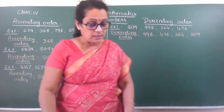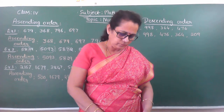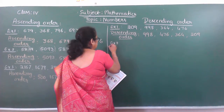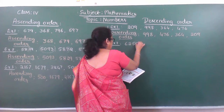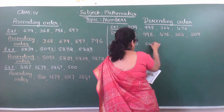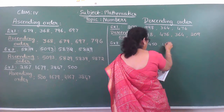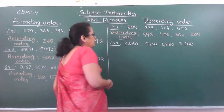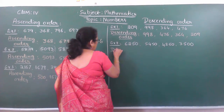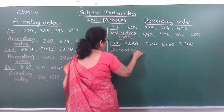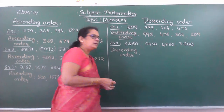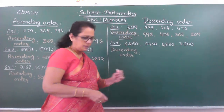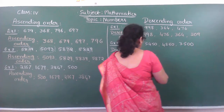So we will take 4-digit numbers now. We will take: 6,250; 5,450; 4,350; and 3,500. Write this in descending order. Go through the thousands place: 6, 5, 4, 3. I will change the question because already the numbers are in descending order as given — that is why.